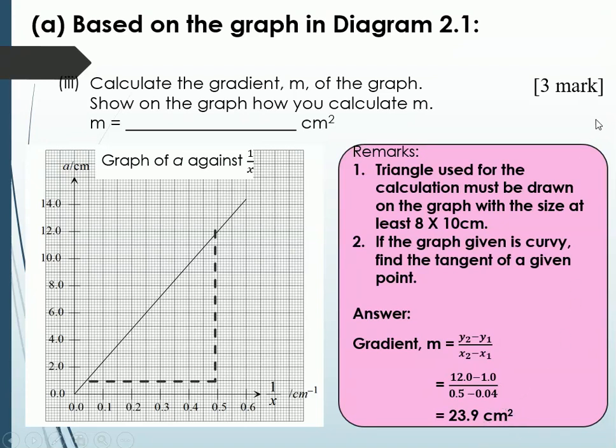3 marks distributed. Number 1, on your graph, the gradient. Number 2, the formula and the substitution value. You have to show this value out. And number 3, your final answer with your unit. If the unit is wrong, this marks is not given. Or if you didn't write your unit, there's no marks for the answer as well.